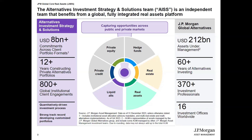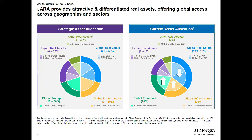Looking at our strategic asset allocation and current positioning: we have a good mix across the real asset spectrum, both public and private. Currently we have 35% in global real estate, focused on US core real estate and Asia-Pacific core real estate. We are not invested in UK and Europe — that is very intentional, since IPO we've acted as a global complement for investors.